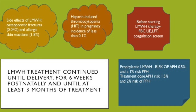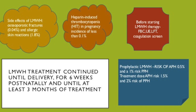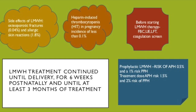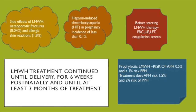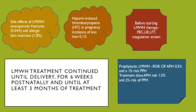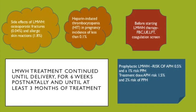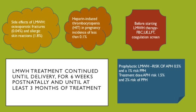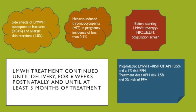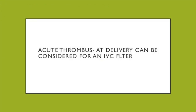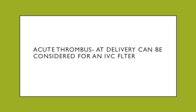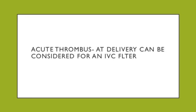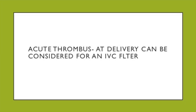With prophylactic low molecular weight heparin, the risk of antepartum haemorrhage is 0.5%, compared to 1.5% with treatment dose. The risk of postpartum haemorrhage with prophylactic dosing is 1%, and with treatment dose low molecular weight heparin it is 2% — double the risk. If there is an acute thrombus at the time of delivery, an IVC filter can be considered for these patients.